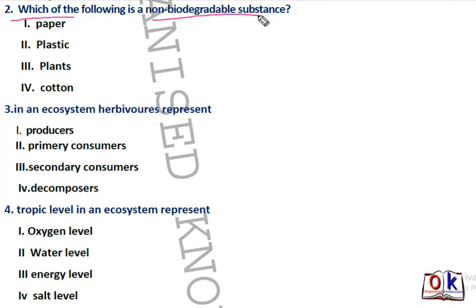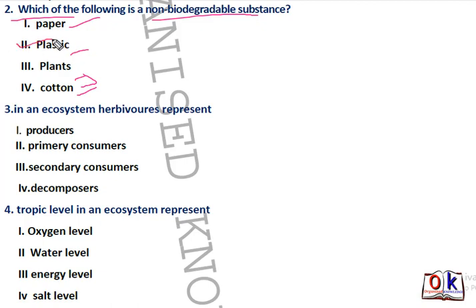Next question: which of the following is a non-biodegradable substance? Non-biodegradable substances are those which decomposers cannot decompose. Options are paper, plastic, plants, and cotton. Paper, plants, and cotton can be decomposed, but plastic is a non-biodegradable substance.